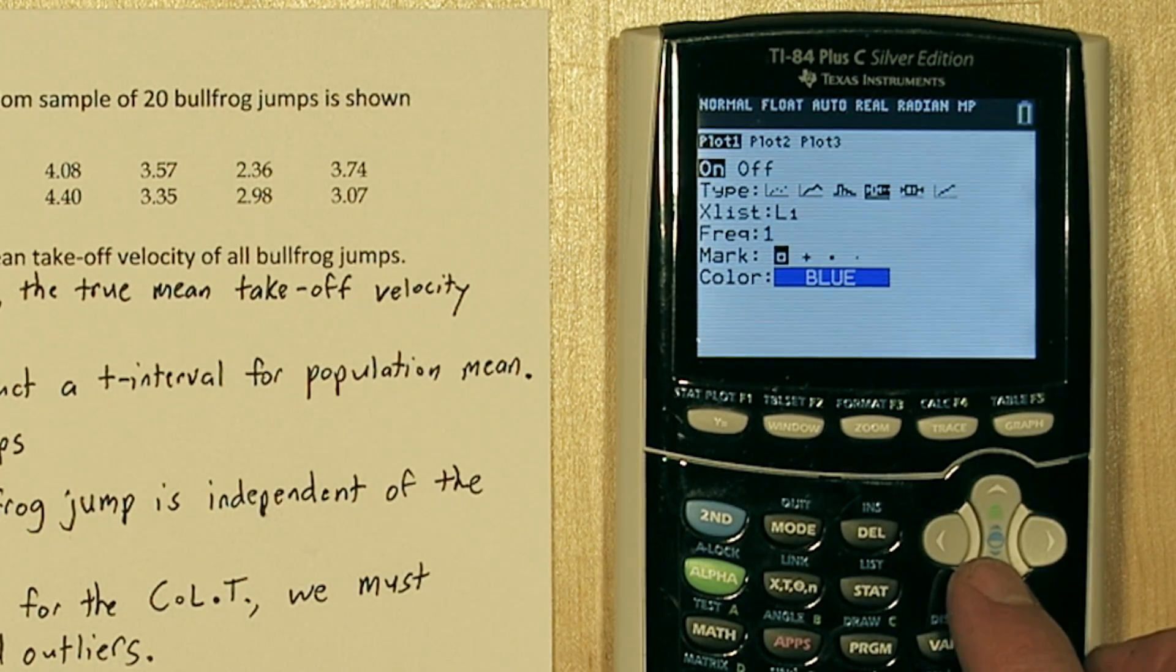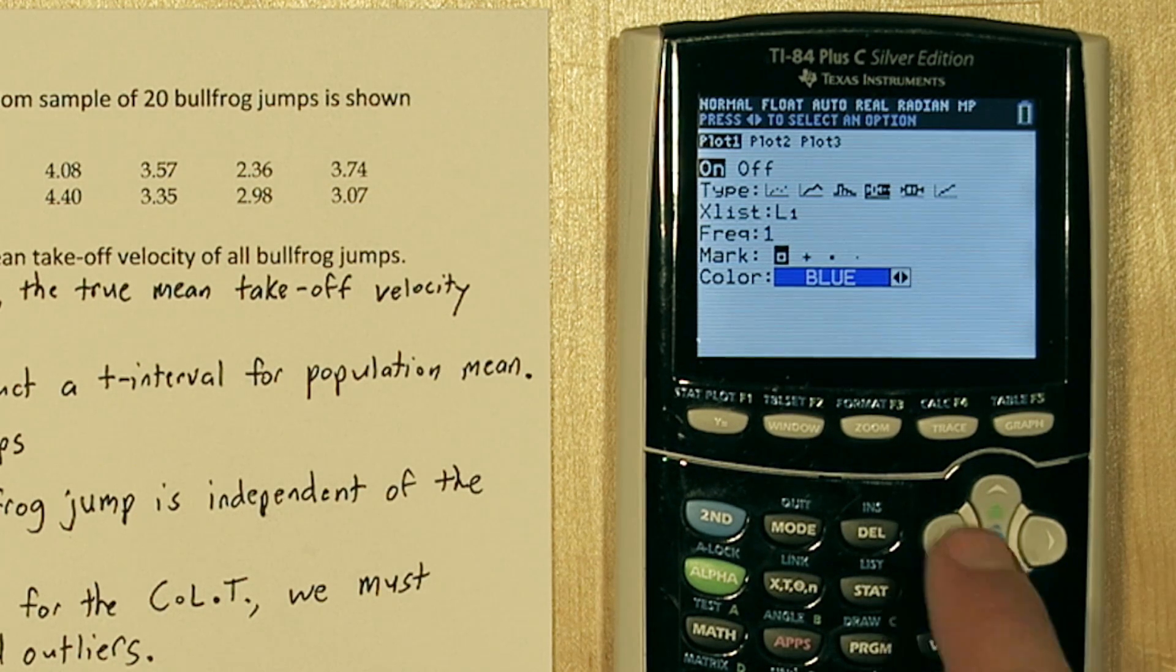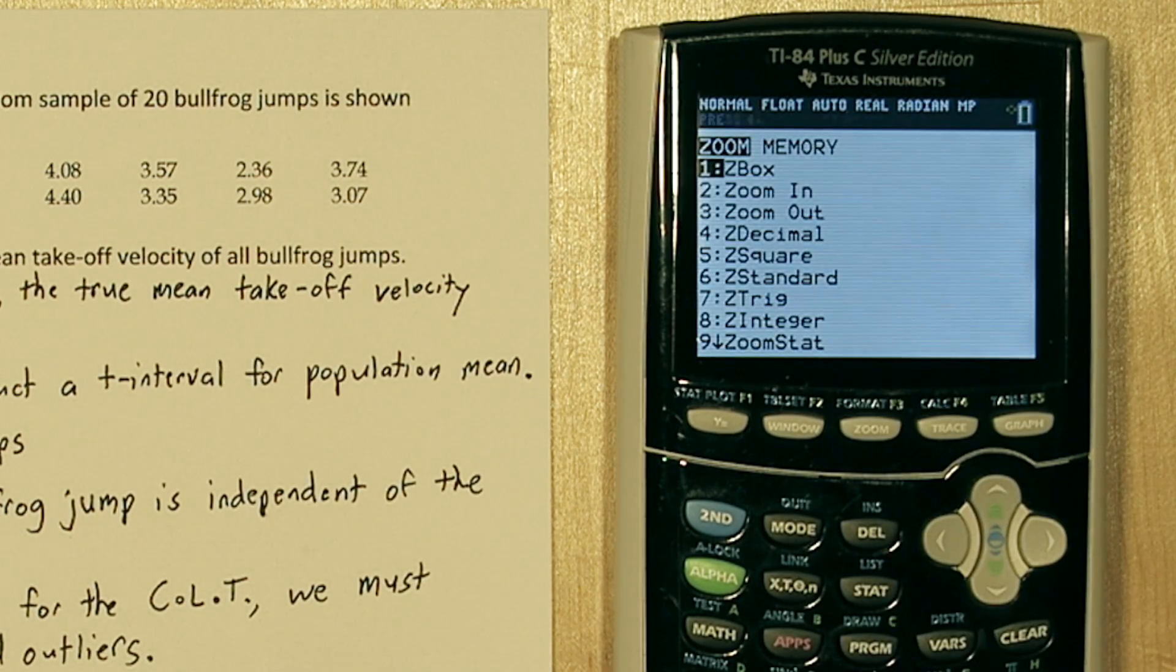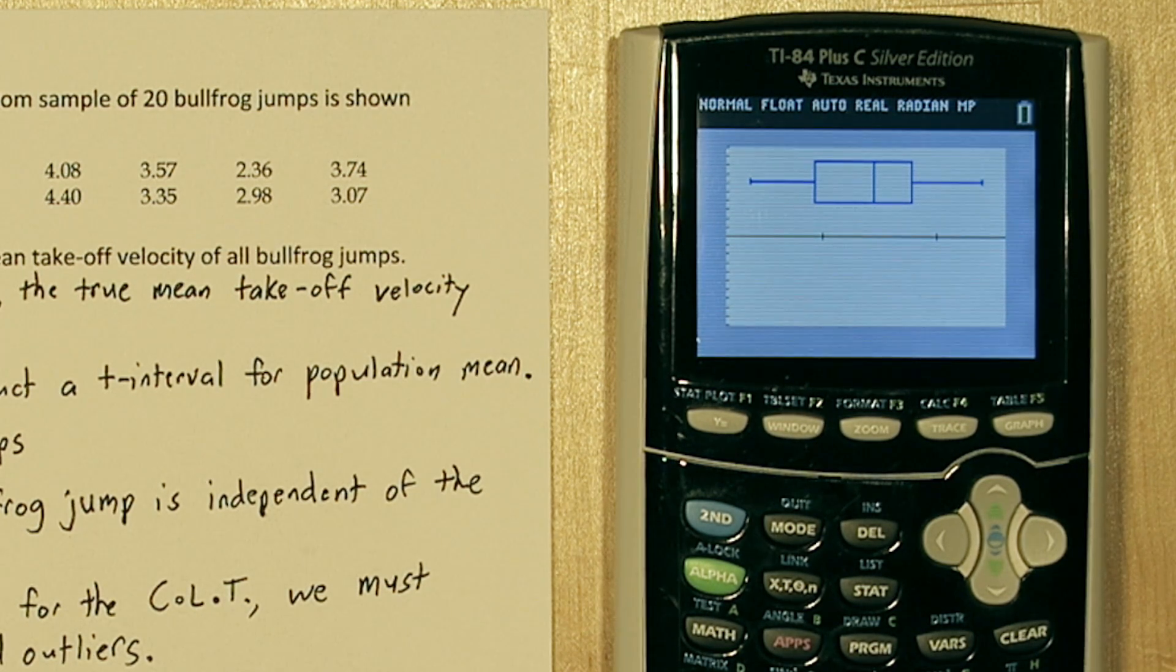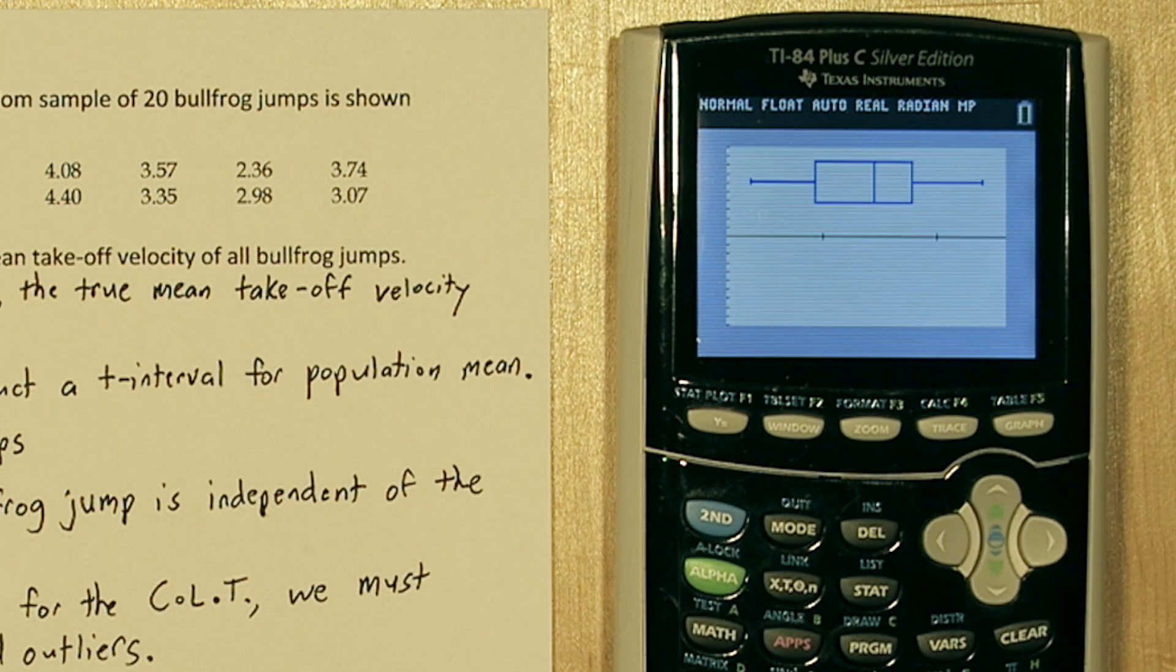You can leave everything else as is if you typed your data into list 1. Now when I press zoom and 9, it will zoom to the correct setting to see this box plot. Now what's important is we don't see any outliers. The whiskers go all the way to the end of the data. There's no little points beyond it, which would indicate outliers.